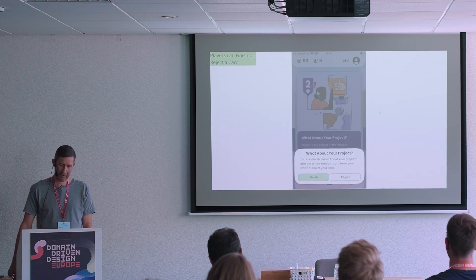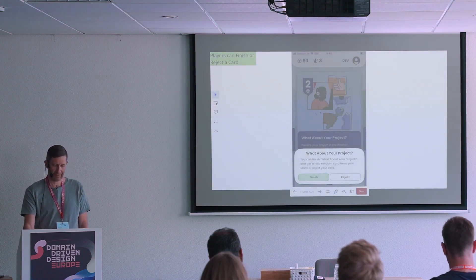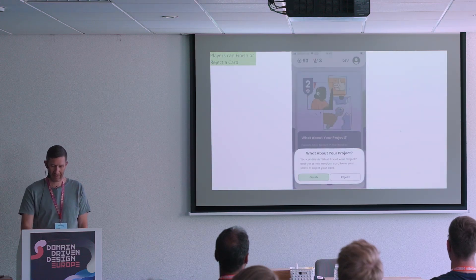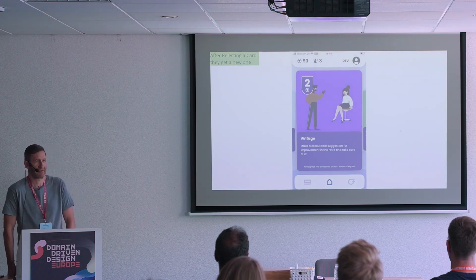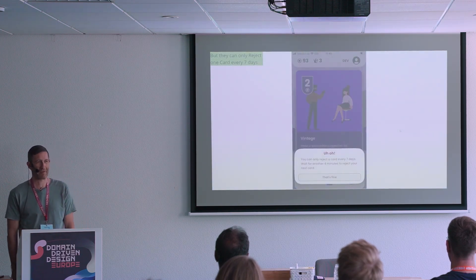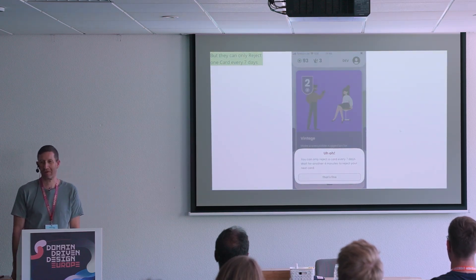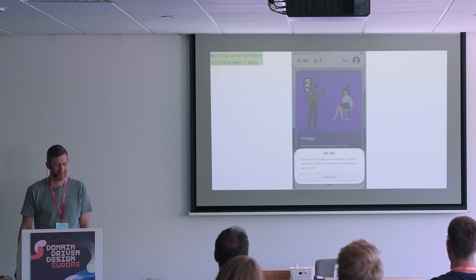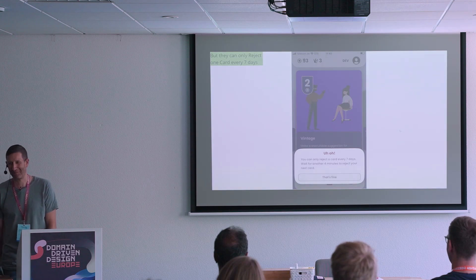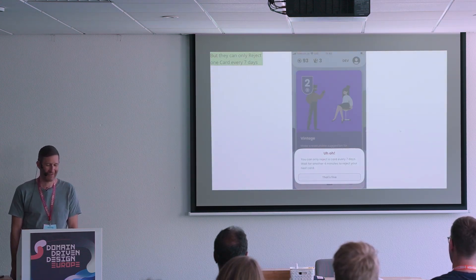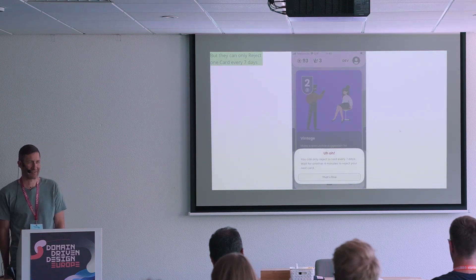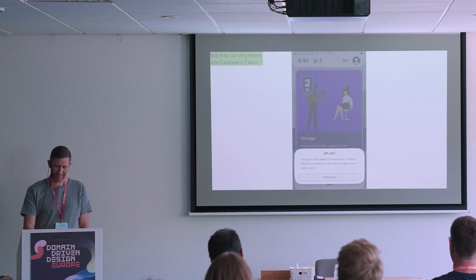When you click on a card, you can either finish the card or reject the card. When you reject it, you just get a new card. So if you get a task that you just don't like, you can reject it. But you cannot just keep rejecting, because then it will tell you: you can only reject a card once every seven days, and you have to wait. In the dev environment, it's configured for five minutes to be able to test — but theoretically four minutes would also make sense if you rejected the last card almost seven days ago.